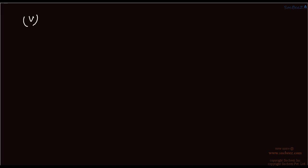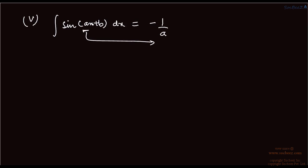The integral of sin(ax + b) dx equals minus 1/a times cos(ax + b) plus c. Again, we are bringing the coefficient a down. A nice way to remember: integration of sine gives cosine and cosine gives sine, but the integration of sine gets a negative sign.